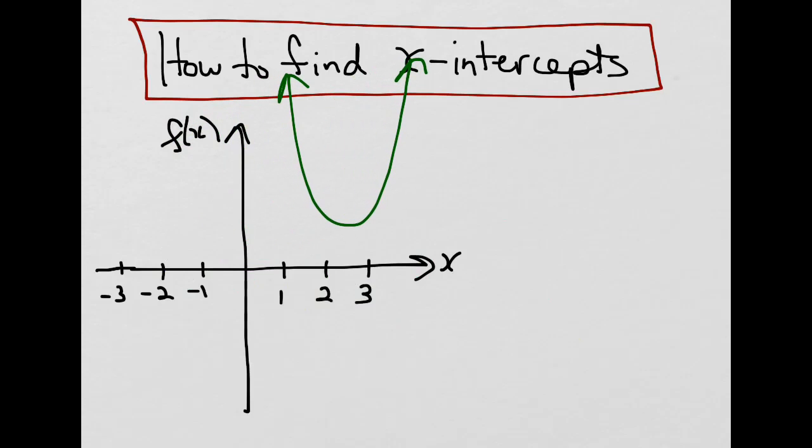Sometimes, too, there may not be any x-intercepts. Remember, the exponent tells us that's the maximum number of intercepts that are possible.